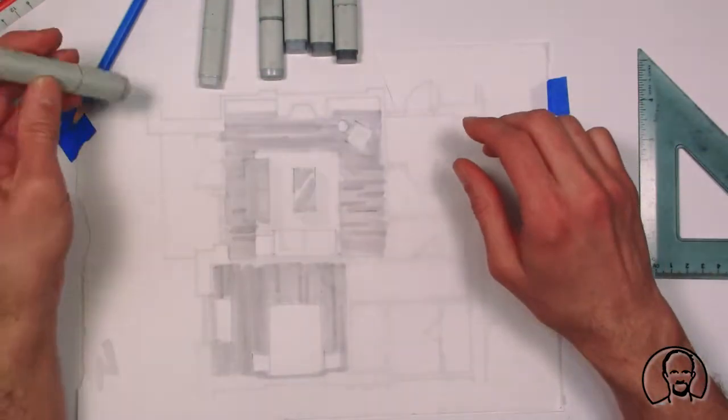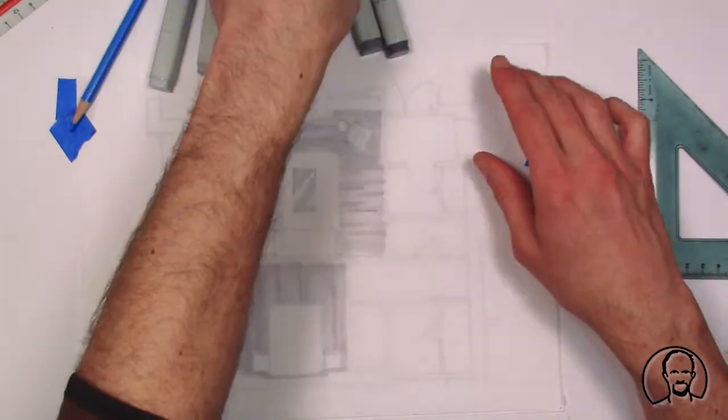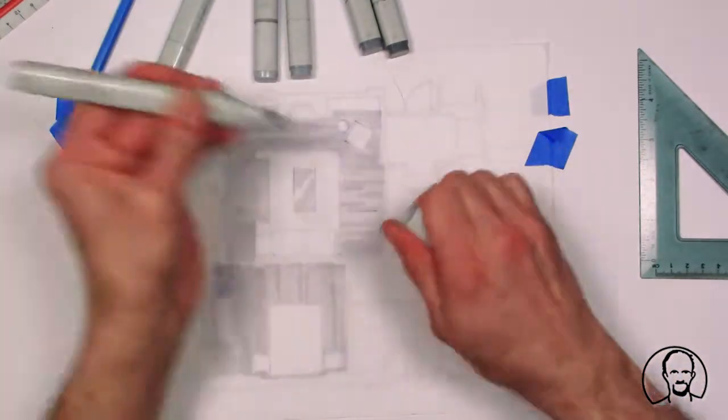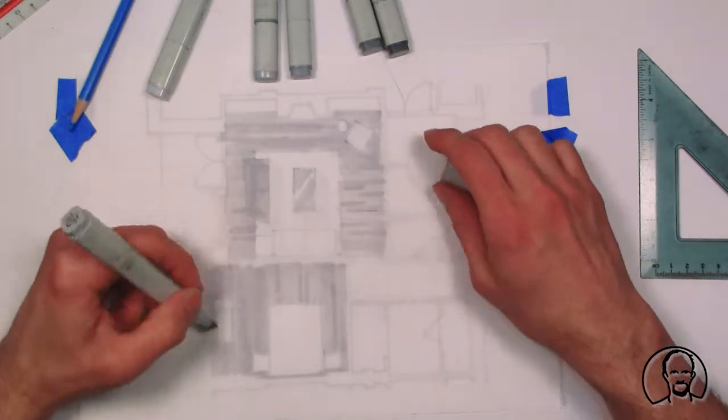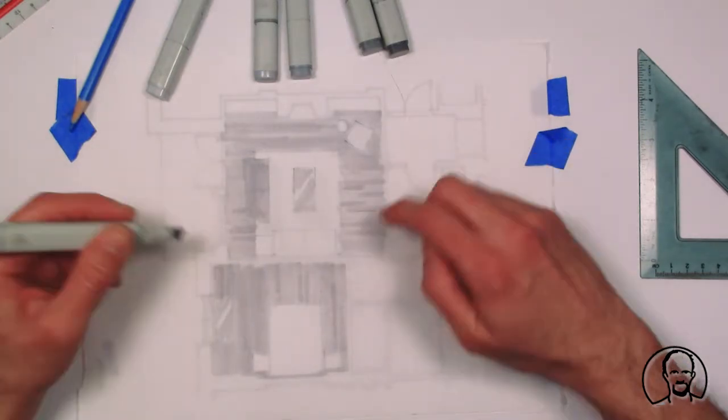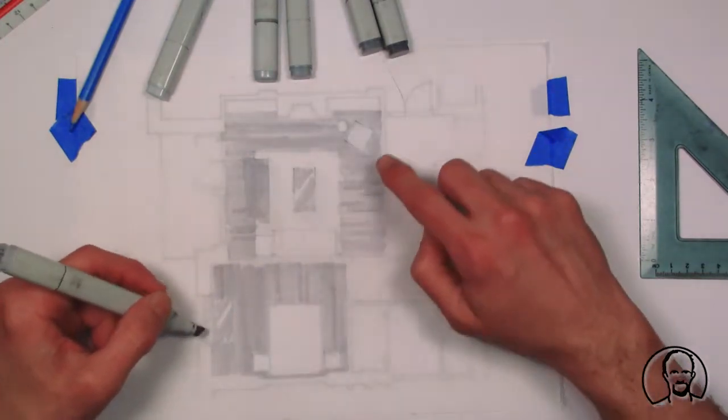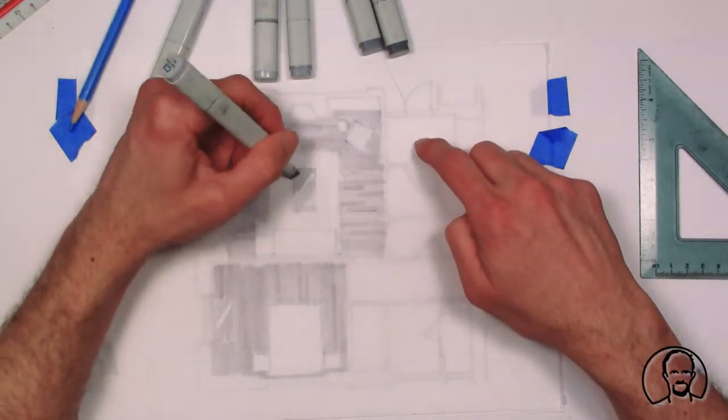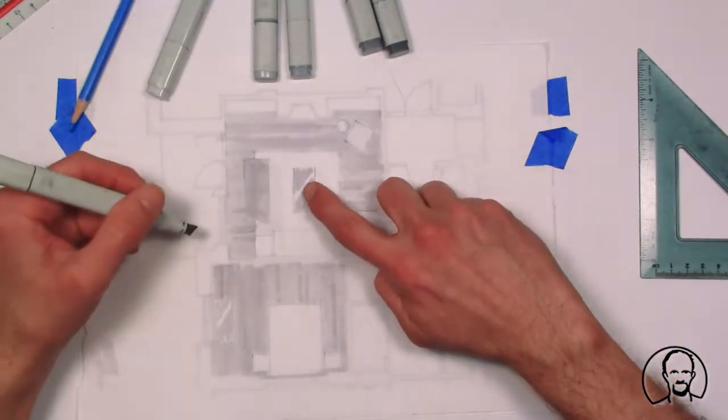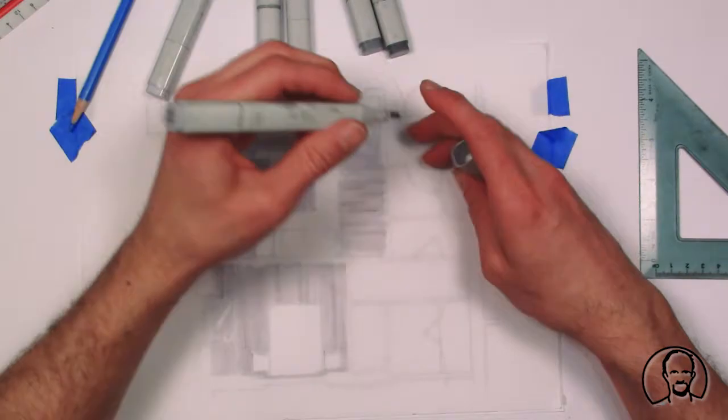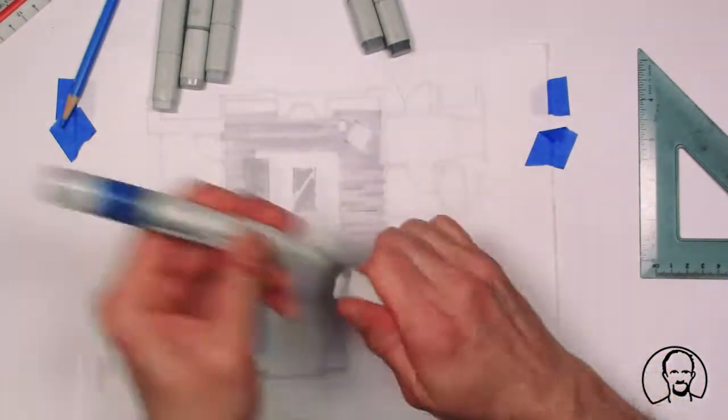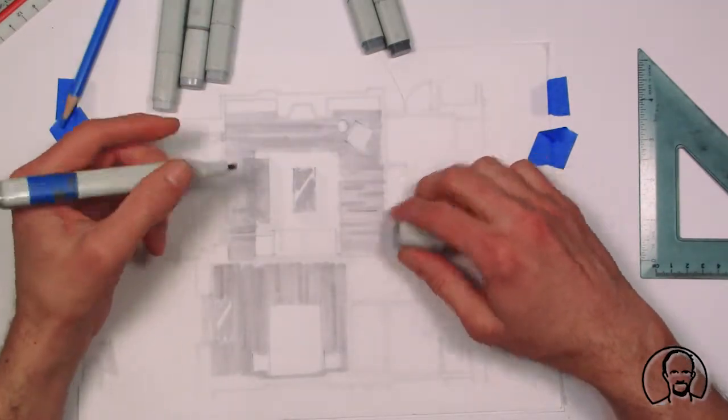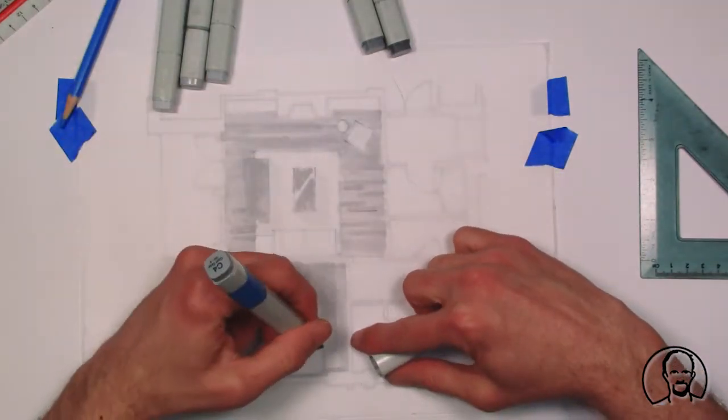After I do that, I'm going to start doing a general color wash on the main furniture pieces. If I have a reflection, I would not cover it, I would leave the white of the paper, such as this portion there. And I'd like to keep my markers always in order like this, so I know how I need to work with them.